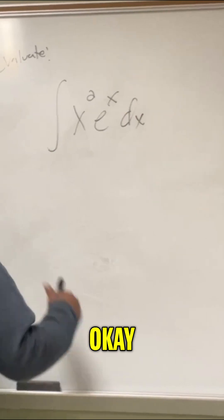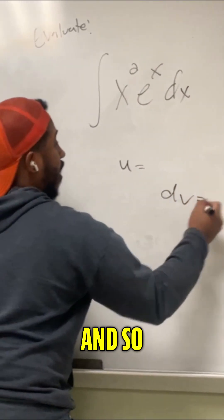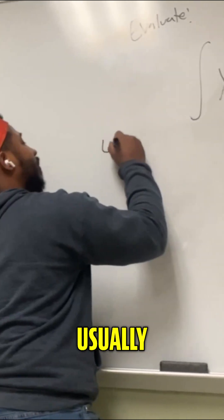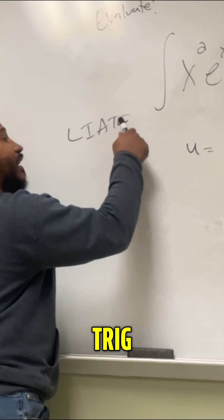So here we use integration by parts, okay, which says I want to rewrite this as u dv. And so what I choose for my u is usually—usually a technique to help us choose: log, inverse trig, algebraic, trig, and then exponential.